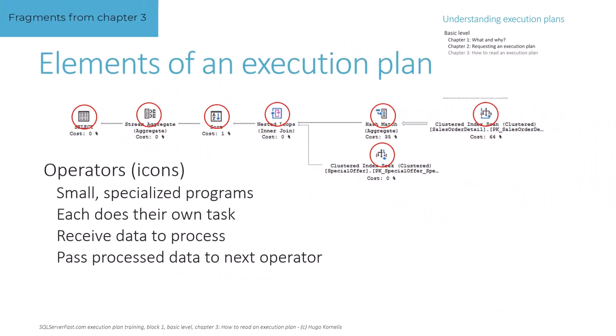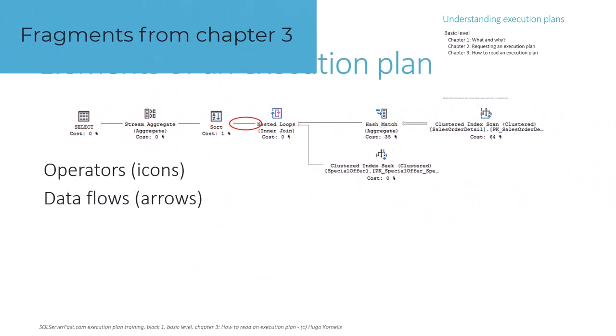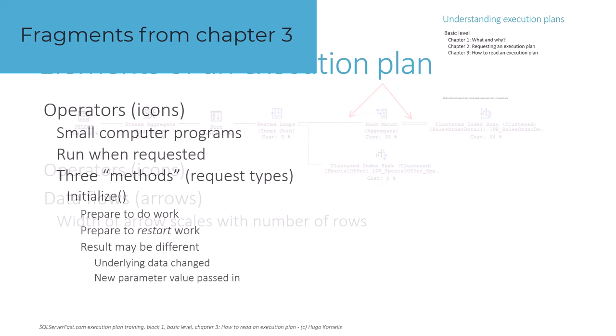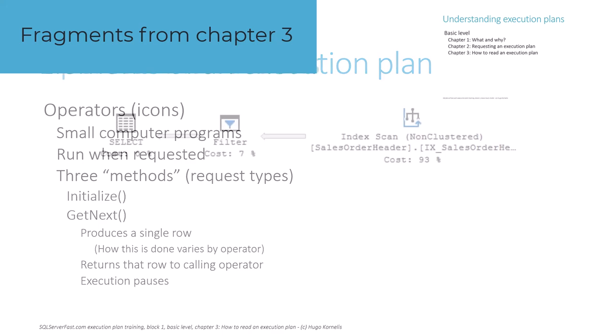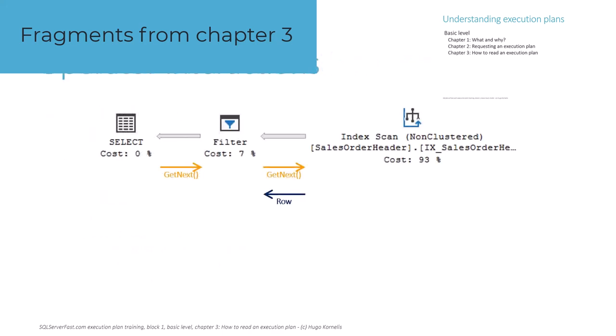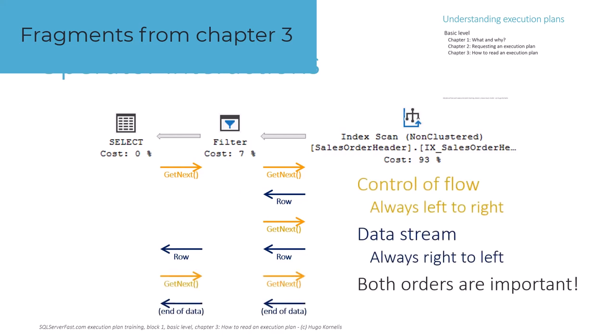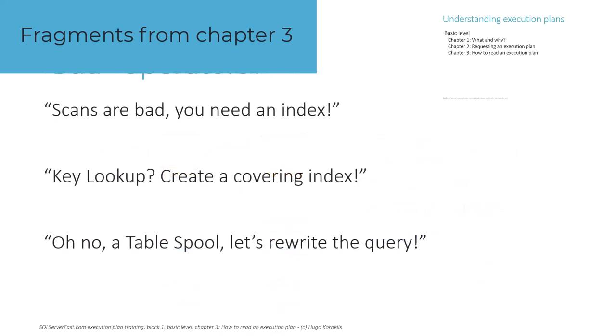In chapter 3 we explain the basics of how to read an execution plan. We cover the main elements of execution plans, the operators and the data flows. We also cover how these two elements interact with each other as an execution plan is running. We then use that knowledge to explain why execution plans should not be read right to left, nor left to right, but each and every way. The chapter ends by addressing a few common misconceptions.